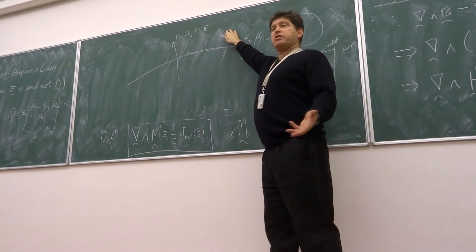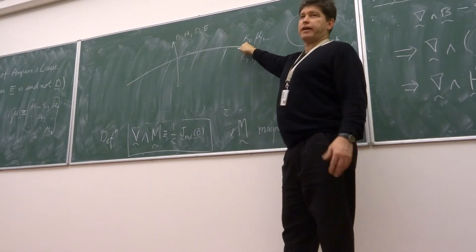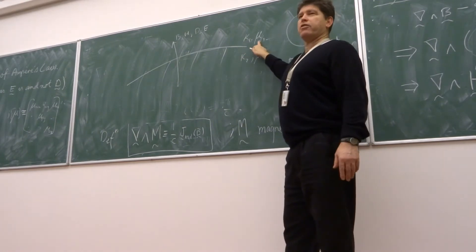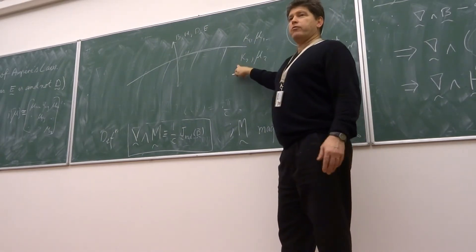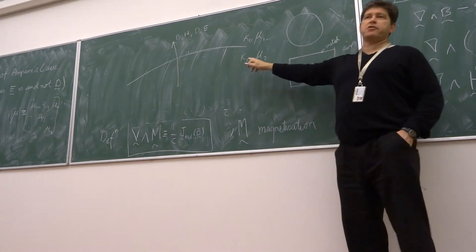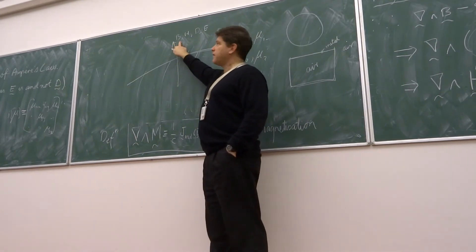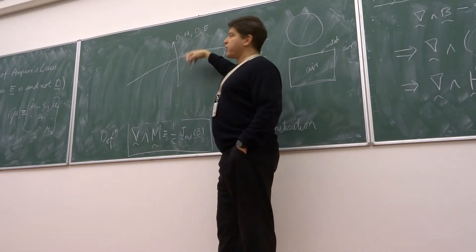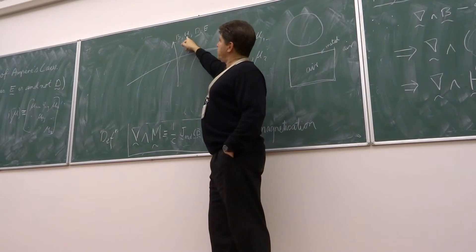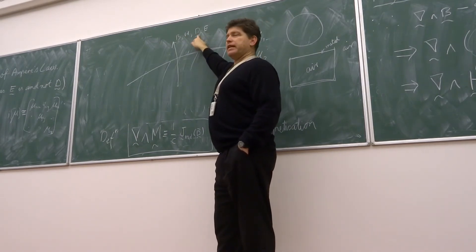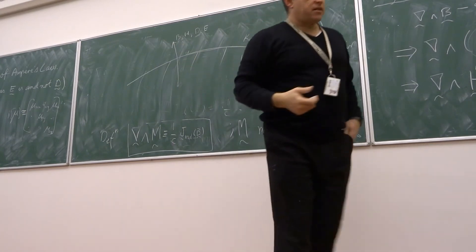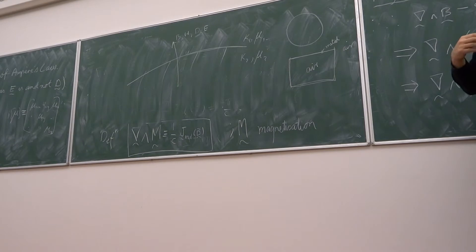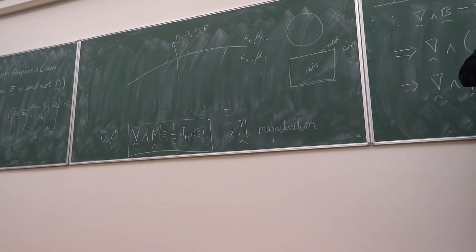In one region of space, the material is characterized by a certain electric polarization response and magnetic polarization response. On the other side of the boundary, we have different electric and magnetic polarization responses. What we have to do is maintain continuity of the primary fields, B and E, as we cross the boundary. So B and its response field H, and E and its response field D, have to have continuity. This is the last topic I'll deal with next Tuesday, and then you'll be ready to understand waveguides and how electromagnetic radiation can propagate down them.